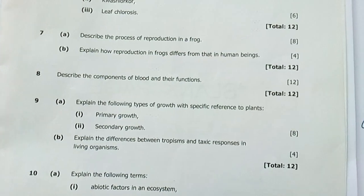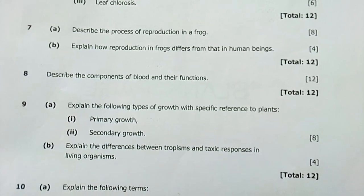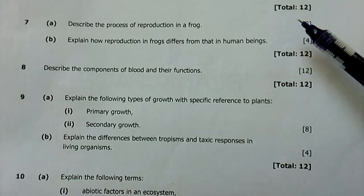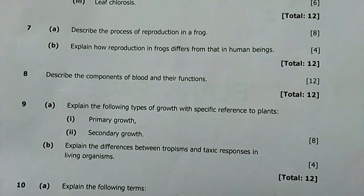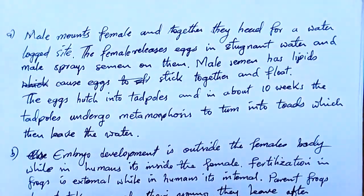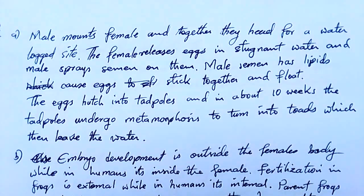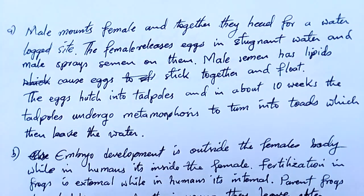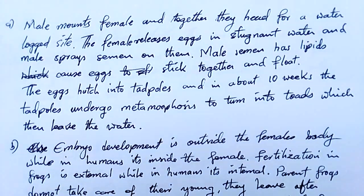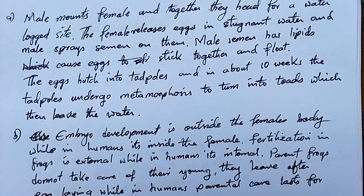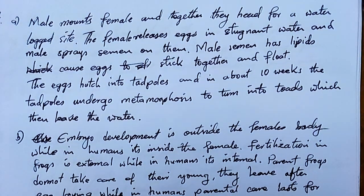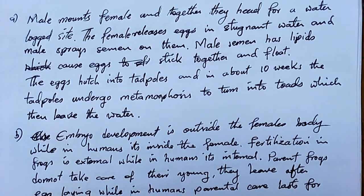Question 7: describe the process of reproduction in a frog — eight solid marks. Male mounts the female and together they head for a waterlogged site. Mounting means getting on top of the female. Males are usually smaller than females, so the female can easily carry the male. The male may climb on the female right there in the water.